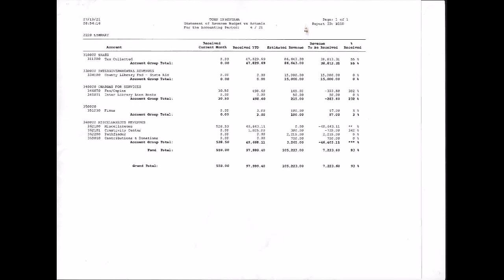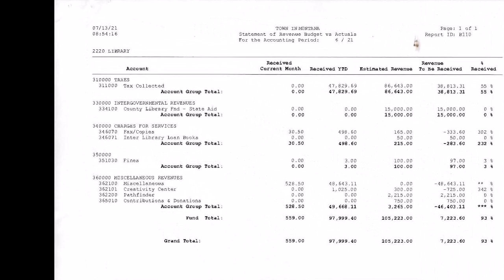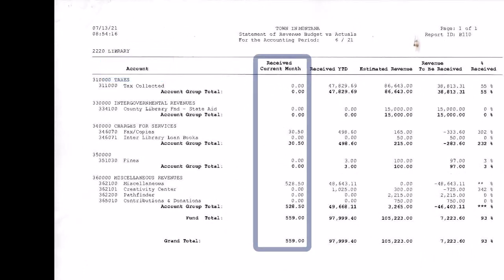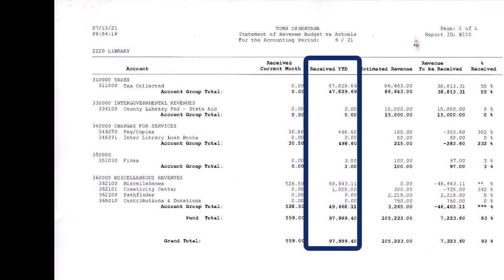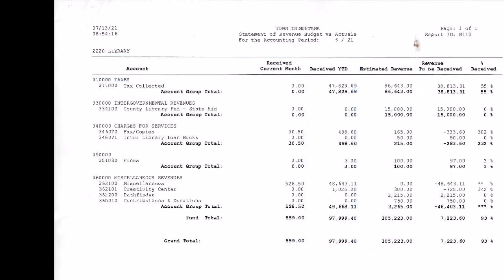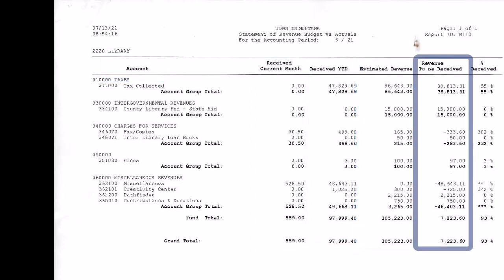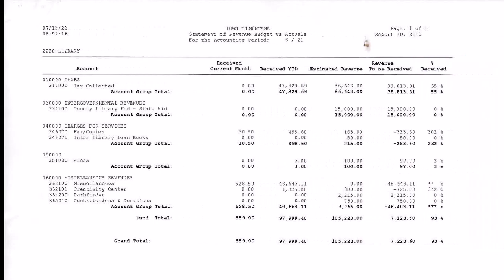For the revenue statement, you will see columns labeled Account, Received Current Month, Received Year to Date, Estimated Revenue, Revenue to Be Received, and the Percent Received.